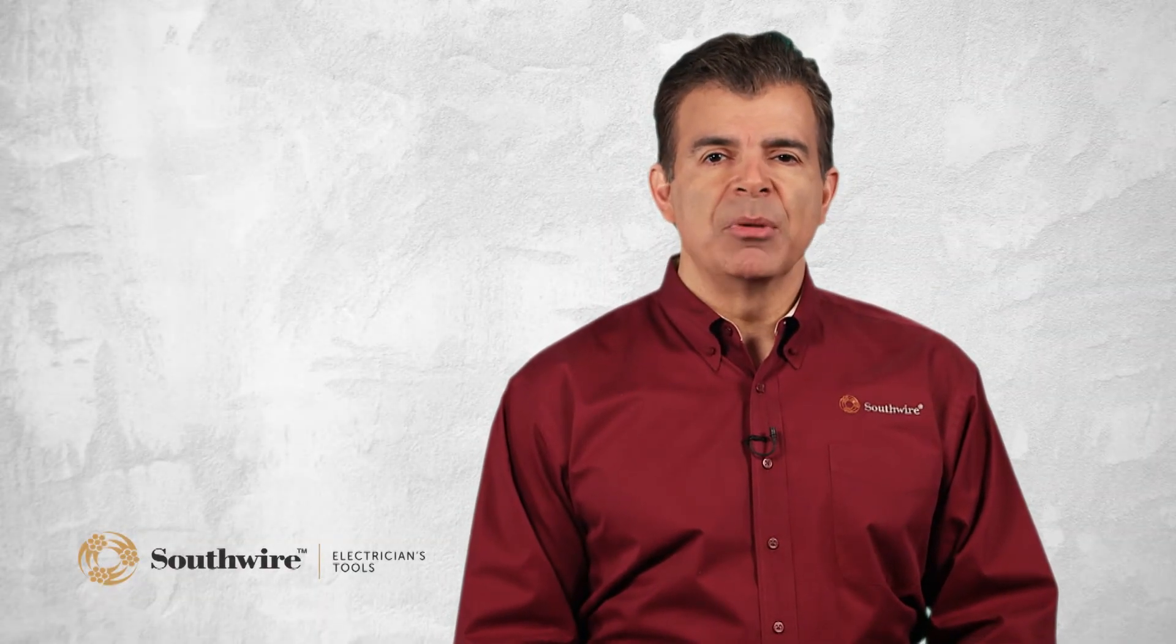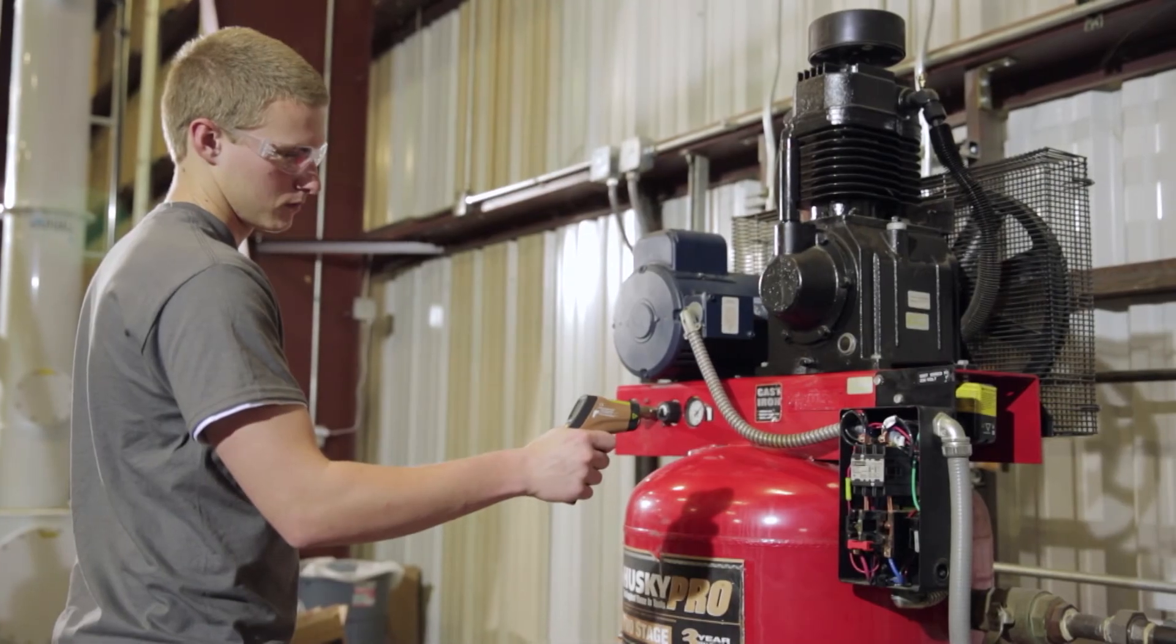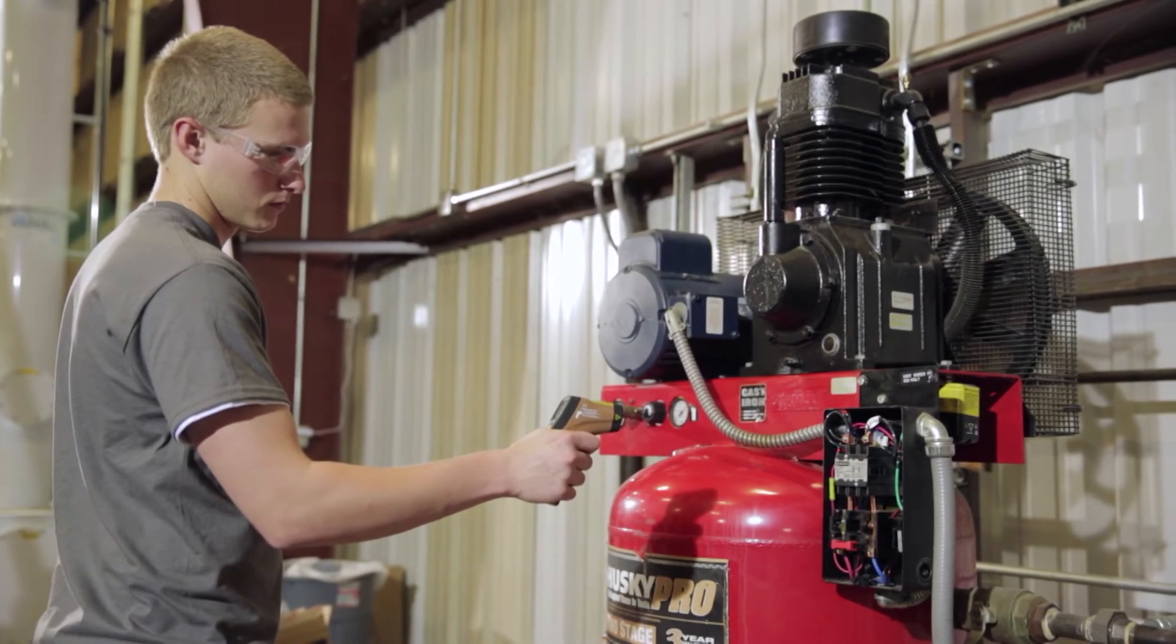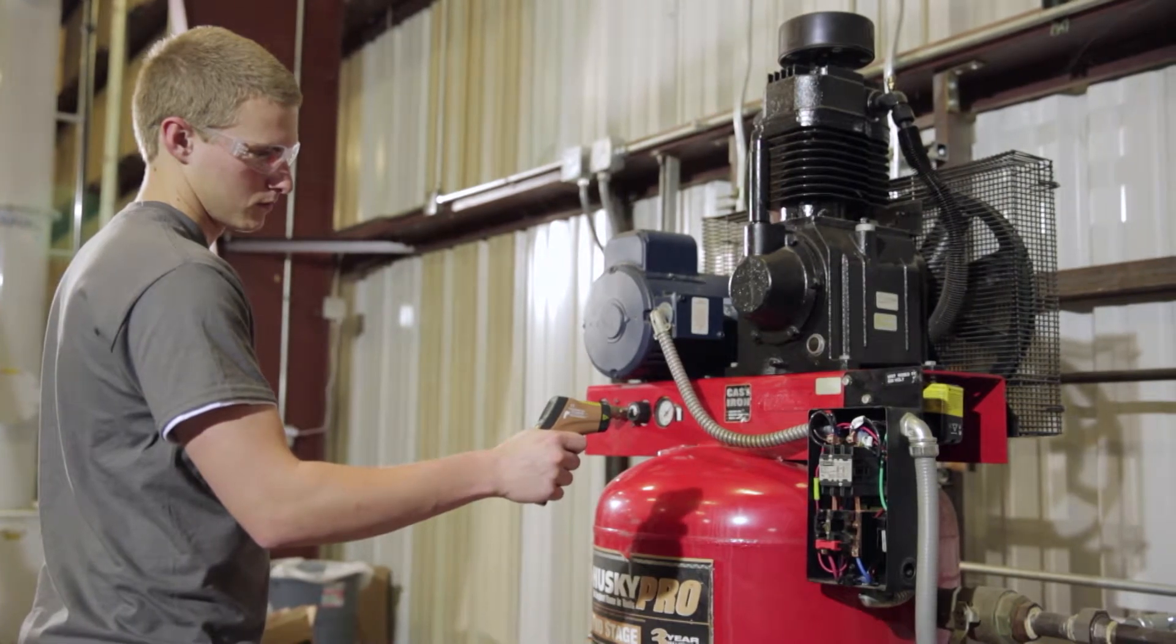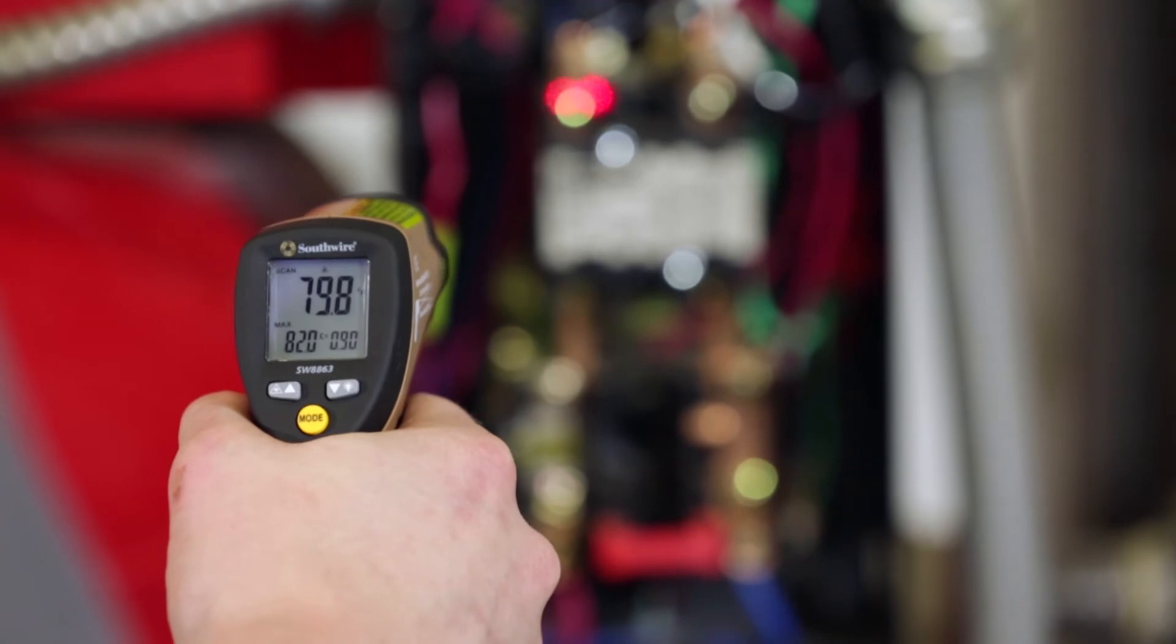Converging laser pointers quickly show the user the optimum measuring distance, allowing accurate spot temperature measurements of an area that is as small as a half inch in diameter. This is a very useful feature when trying to locate hot spots on small objects such as electrical connections, fuses, circuit breakers, motor bearings, and machinery.